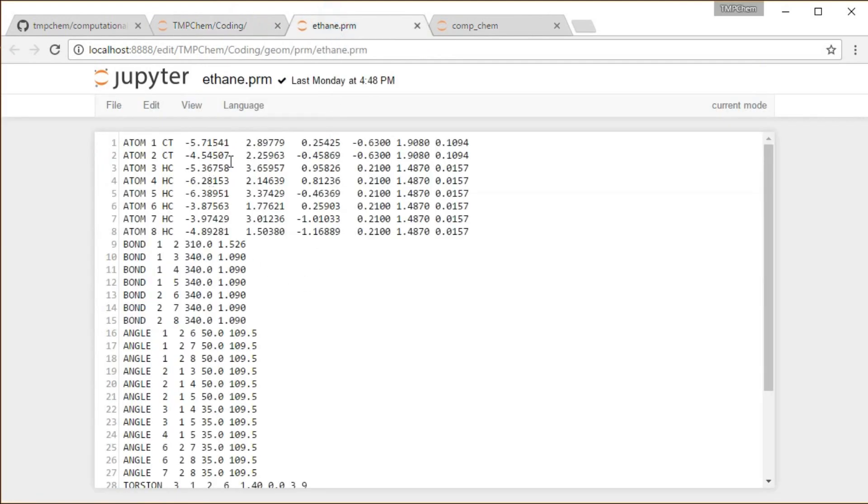I'm going to be running a file called ethane.prm, a parameter file for ethane, where I'm declaring the atoms, their X, Y, Z coordinates, their atom types, indices, et cetera.